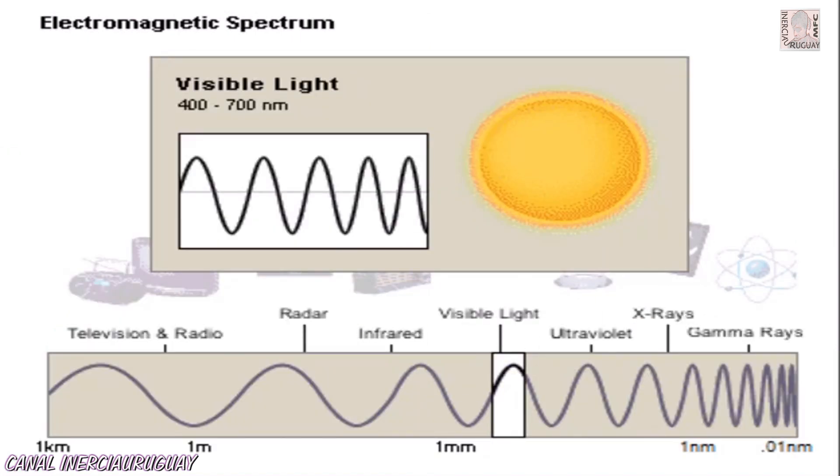Visible light represents only a narrow band of the electromagnetic spectrum, which includes many kinds of waves.